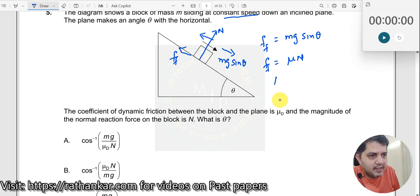So μ times N is equal to mg sine theta. What do we need? We need theta. So therefore, μ times N divided by mg is equal to sine theta, or theta is equal to arc sine or sine inverse μ times N divided by mg.